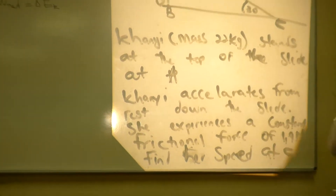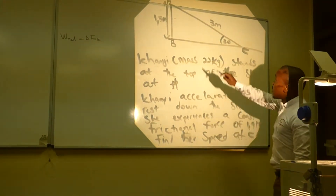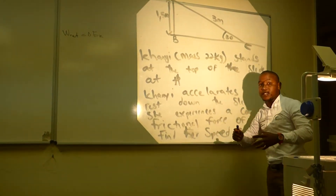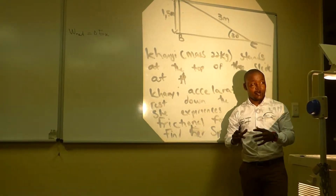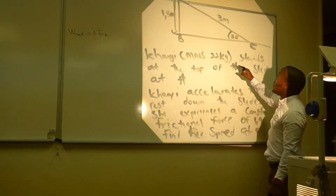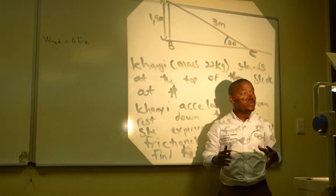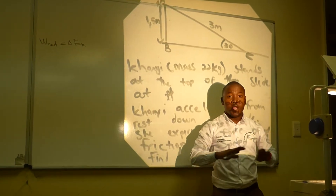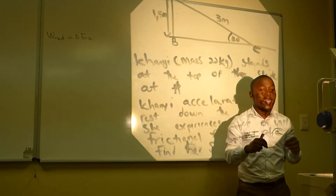Let's analyze the situation. Kylie slides down the ramp and experiences a constant frictional force of 1.9 newtons. Our task is to find the speed of Kylie at point C. It would be easy to use the principle of conservation of mechanical energy, but we are not going to use that principle.